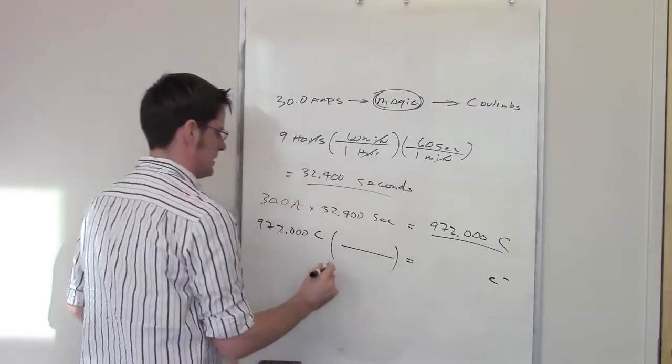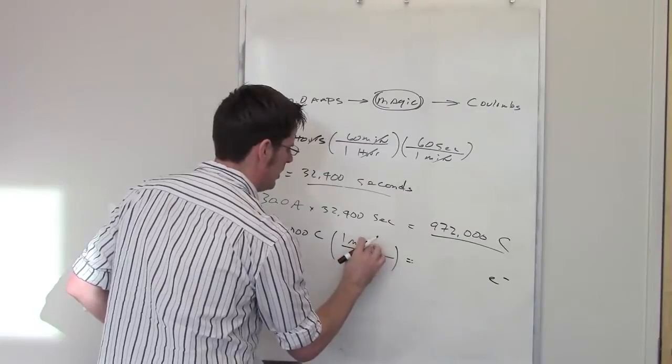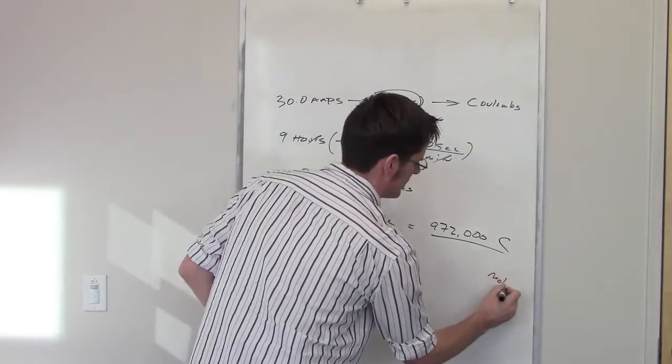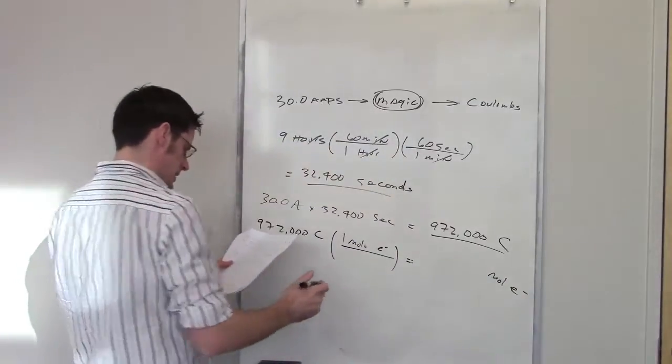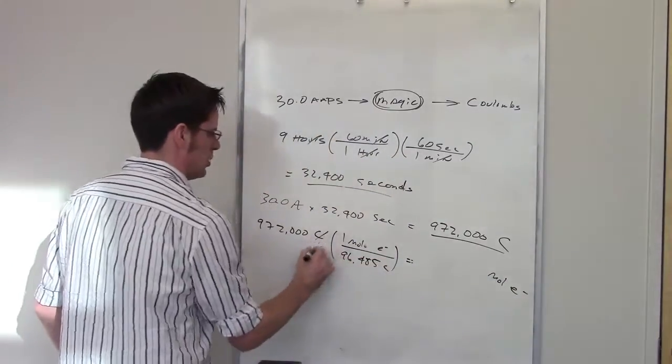So, I want to do something where I get electrons out the other side. I should remember then that, once again, one mole of electrons, I guess I'm trying to convert into moles of electrons, clarify that, is equal to 96,485 Coulombs. Coulombs cancel each other out.